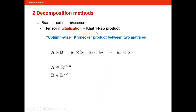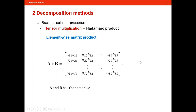Then we have the Khatri-Rao product, which is the column-wise Kronecker product between two matrices — we perform the Kronecker product between each corresponding column of the two matrices. Finally, we have the Hadamard product, which is the element-wise matrix product. The Hadamard product between matrices A and B is simply their elements multiplied with each other, and A and B must have the same size.